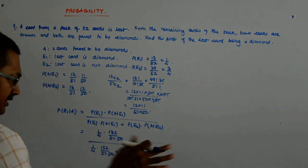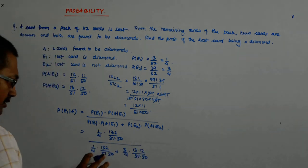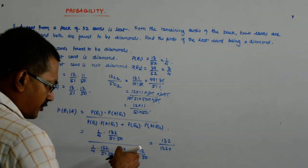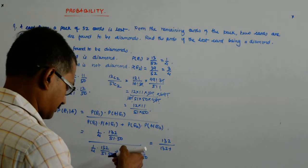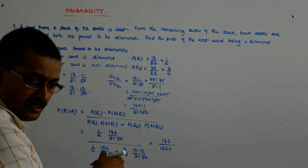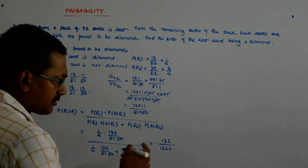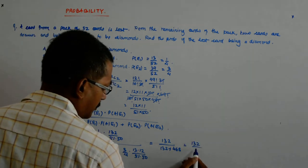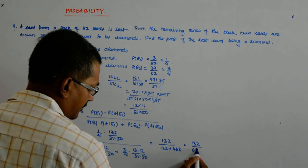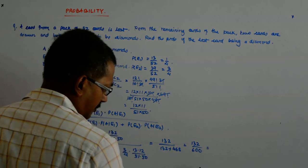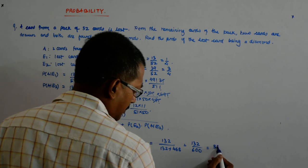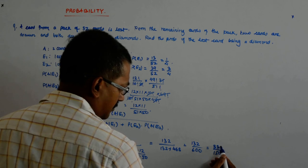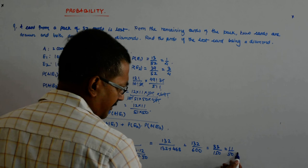The advantage is that the denominator simply vanishes and I am left with 132 divided by 132 plus - this is 13 into 12 which is 156 into 3, right? So that is 468. That will give me 132 divided by 600. So if I divide by 4, 11 upon 50.